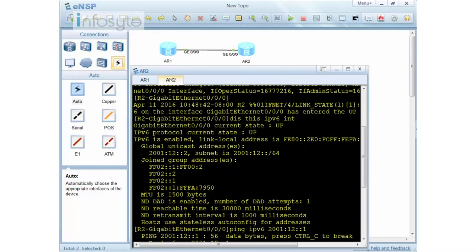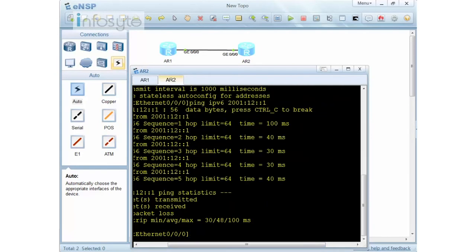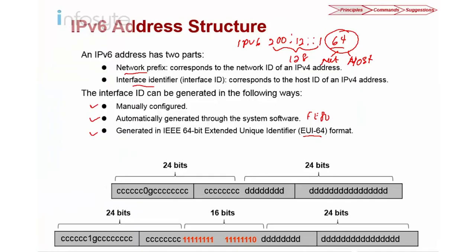Now we want to look at address generation using the EUI-64 format. A MAC address has 48 bits: the first 24 bits are the vendor ID and the second 24 bits are the vendor's serial number — so different vendors like Huawei, Intel, and Broadcom will each have their own vendor ID.